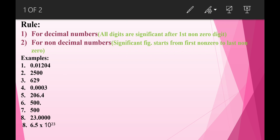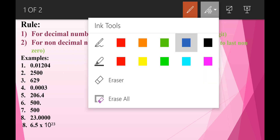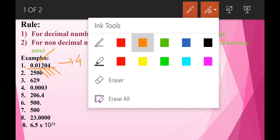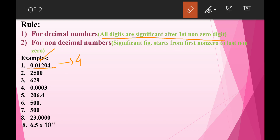Let's solve some examples. The first number is 0.01204. This is a decimal number, and the rule for decimal numbers is that all digits are significant after the first nonzero digit. Here the first nonzero digit is 1, so after 1 all digits are significant: 1, 2, 0, and 4. Therefore, the significant figures for this number is 4.